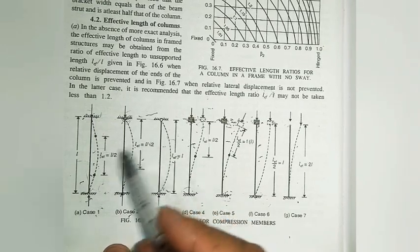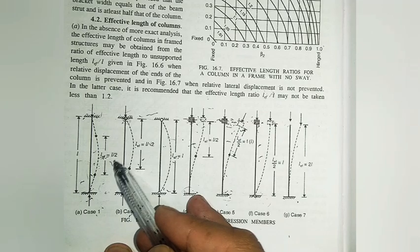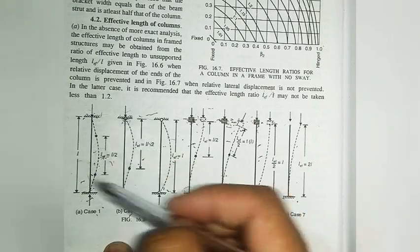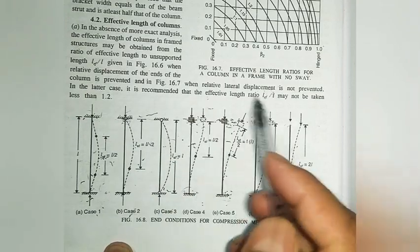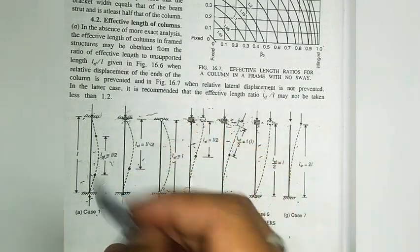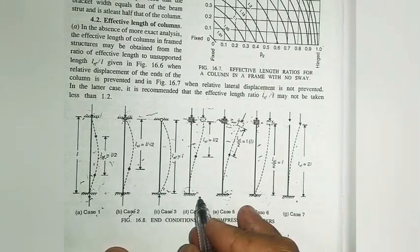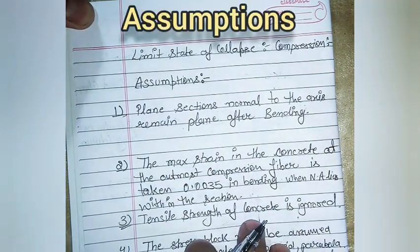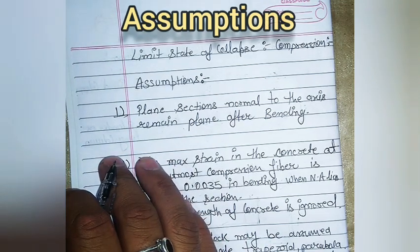These are the seven support conditions on the basis of which we calculate the effective length of the column. You will be provided with the length of the column, but you need to calculate the effective length based on the support conditions using the values recommended by the Indian Standard code.